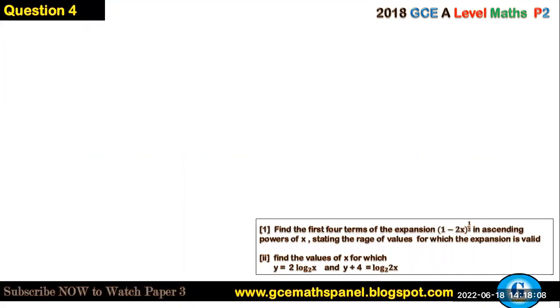The first four terms of the expansion (1 - 2x)^(1/2) in ascending powers of x, stating the range of values for which the expansion is valid. Now, note that with this particular question, the power that we have here is a half. So we will not be applying the Pascal's triangle. So we have to do it directly. Pascal's triangle will not really help yet. As you know, the Pascal's triangle is very good when we have natural numbers.